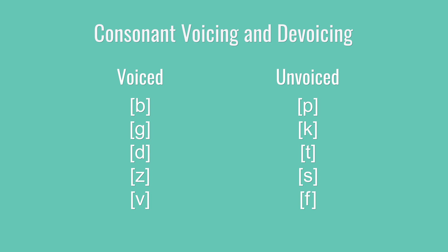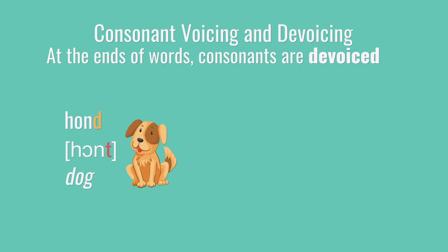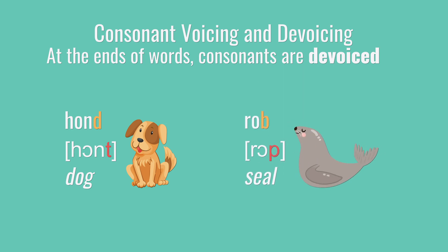Now in Dutch, this becomes important in three different contexts. The first is the most common. When you find a voiced consonant at the end of a word, you're going to devoice it. So the d at the end of hond is going to turn into a t sound, and the b at the end of rop will turn into a p sound.